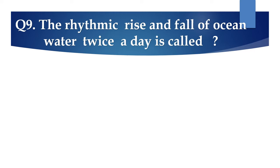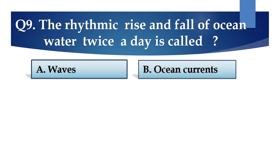Question 9: The rhythmic rise and fall of ocean water twice a day is called: A. Waves, B. Ocean currents, C. Tides, or D. Tsunami.